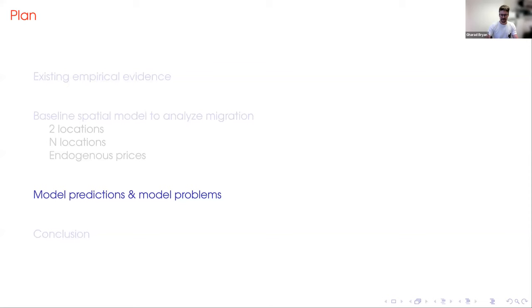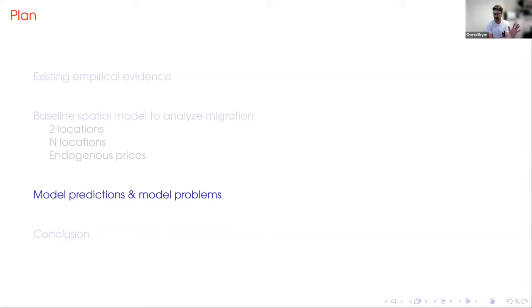Thanks for that introduction, Melanie. The reason I live in London is my deep love for very small amounts of rain — drizzle — which is what's happening outside at the moment. It falls to me to talk about the model predictions: what do we get out of these models when we calibrate them with real-world data, and what are the problems with the models? Our whole goal here is to move towards more external validity. We want to use the models to predict what's going to happen when we have climate change — a very large-scale event, the like of which we really don't see in existing data.